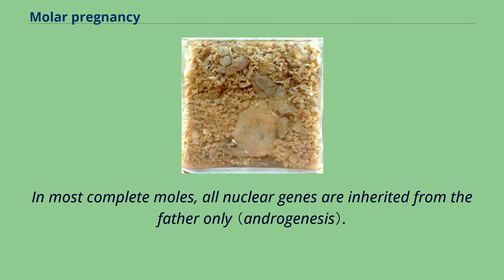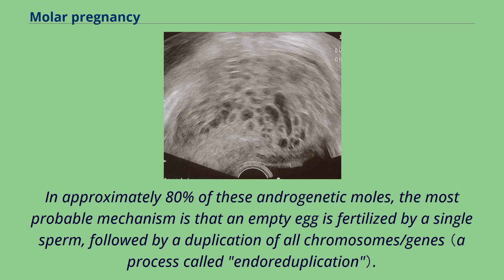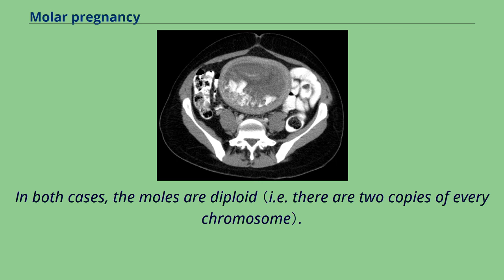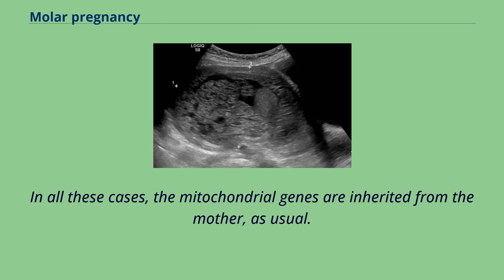In most complete moles, all nuclear genes are inherited from the father only. In approximately 80% of these androgenetic moles, the most probable mechanism is that an empty egg is fertilized by a single sperm, followed by a duplication of all chromosomes and genes. In approximately 20% of complete moles, the most probable mechanism is that an empty egg is fertilized by two sperm. In both cases, the moles are diploid. In all these cases, the mitochondrial genes are inherited from the mother, as usual.